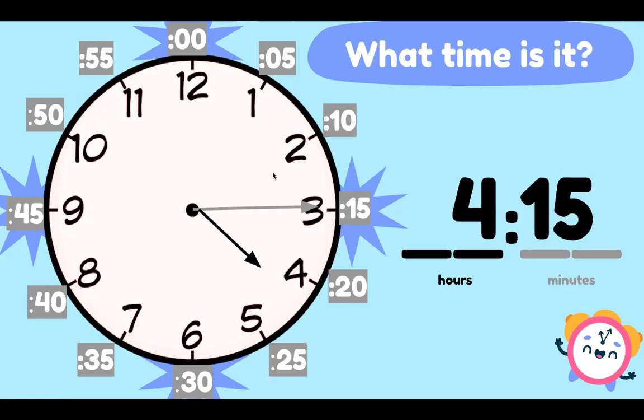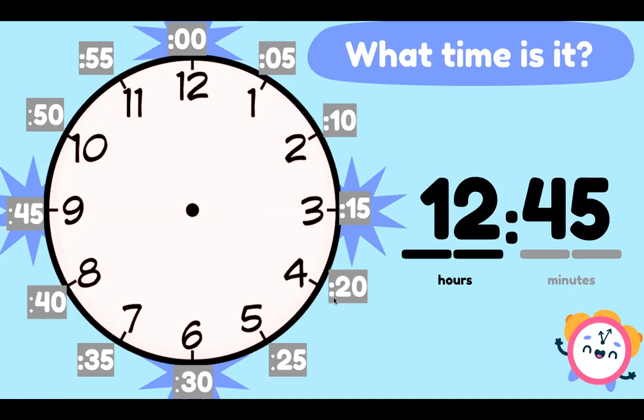And remember, as the minute hand goes around the clock, the hour hand moves just a little bit. Now 12:45. Can you think about where the hands are on the clock? Where is our short hand, the hour hand pointing? Where is the long hand, the minute hand pointing? There it is. It's not on one yet. It looks like it almost is because it's almost one o'clock. But this shows 12:45.